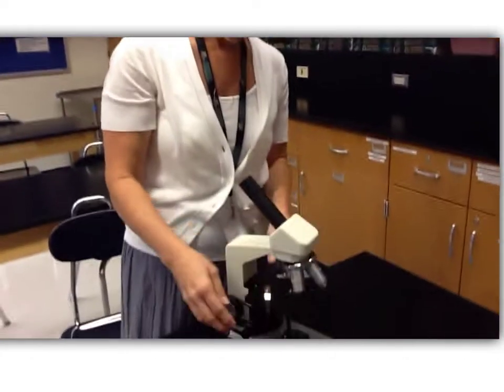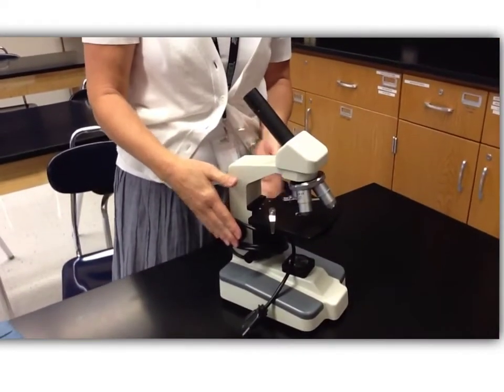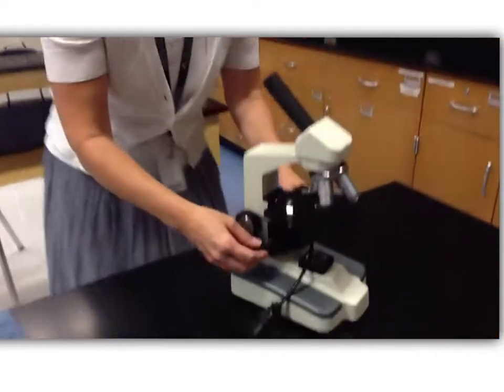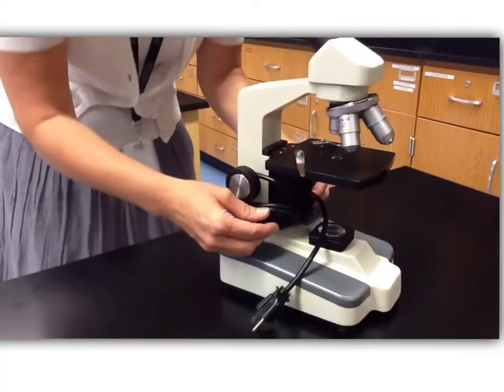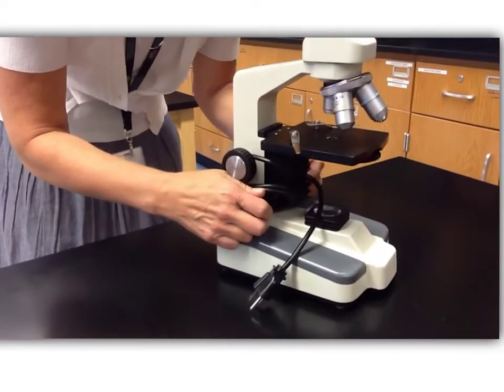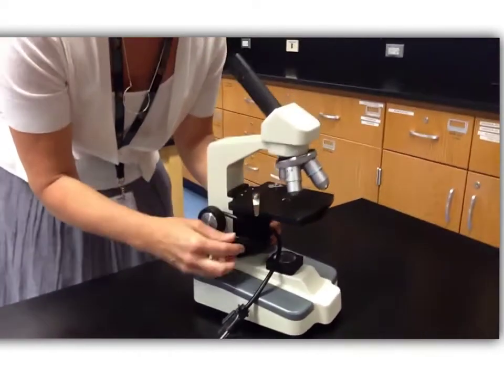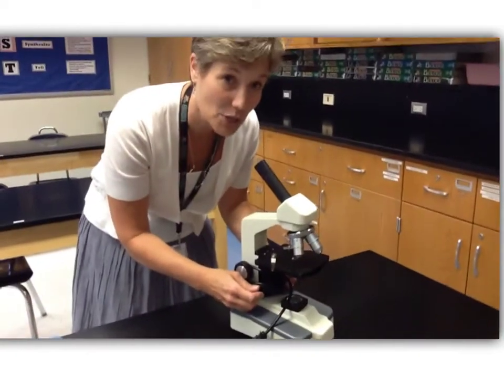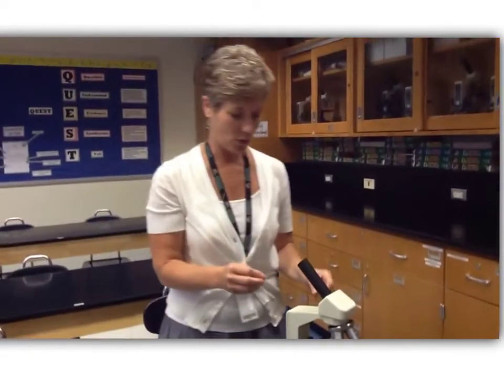When you have your object in view and it's kind of focused, then you're going to use the fine focus knob. The fine focus knob is going to also move the stage, but it's going to move it in such a small amount that you can't see it visually, but it's moving it to focus the object, so you get really sharp focus.